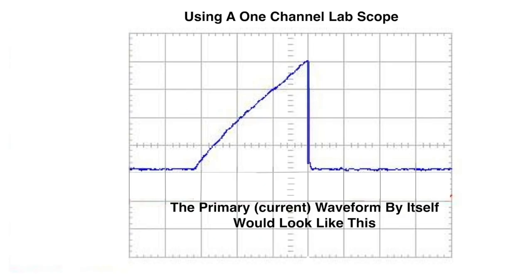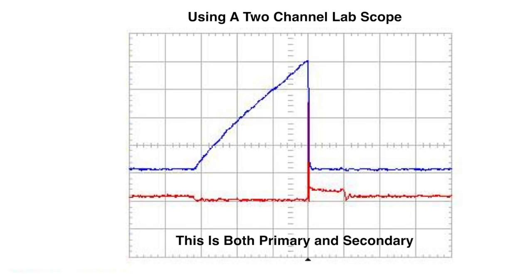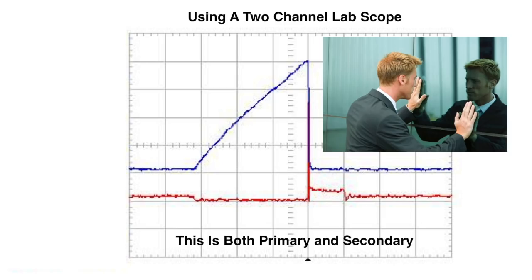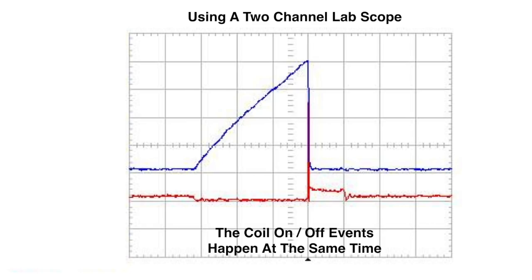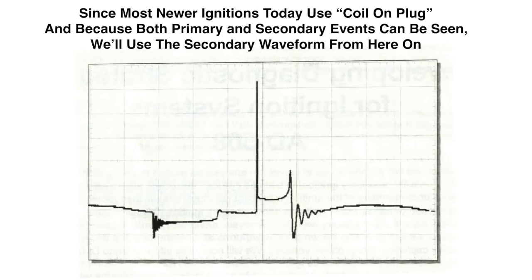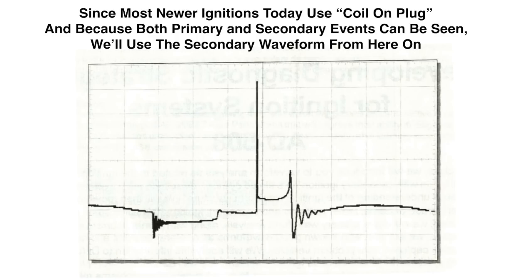Using a one-channel lab scope, the primary current waveform by itself would look like this — it's read as amps. This is both primary and secondary superimposed on top of each other. The coil on and off events happen at the same time in both primary and secondary. Since most newer ignitions today use coil-on-plug and because both primary and secondary events can be seen, we'll use the secondary waveform from here on.